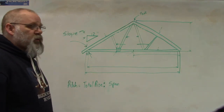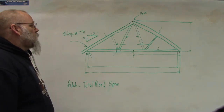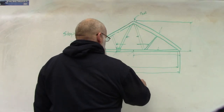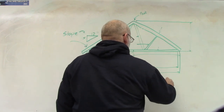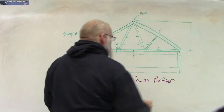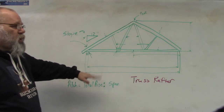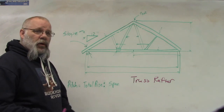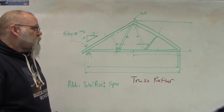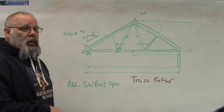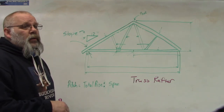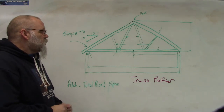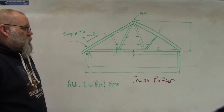Let's talk rafter terms. This is a truss rafter. Truss rafters are rafters that are built in a shop or a factory and then they're shipped to the job site and installed as one piece. Whereas if you make the rafters all yourself, then that is what they call a stick built roof. So let's go over the terms for this truss rafter.